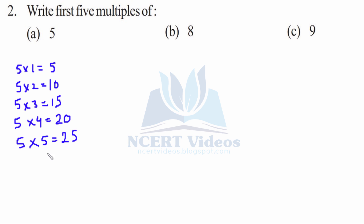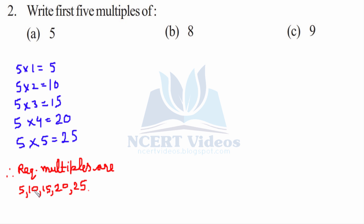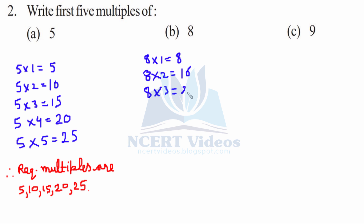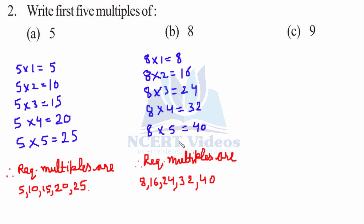For 8, using the similar approach: 8 into 1 is equal to 8, 8 into 2 is 16, 8 into 3 is 24, 8 into 4 is 32, 8 into 5 is 40. So the required multiples are 8, 16, 24, 32, 40.